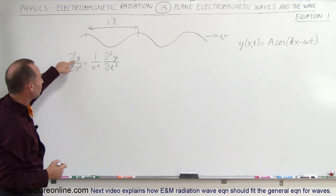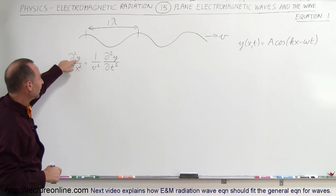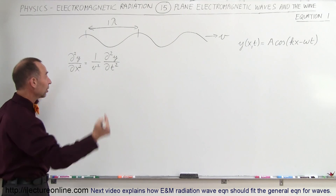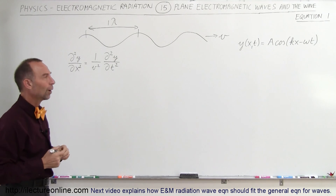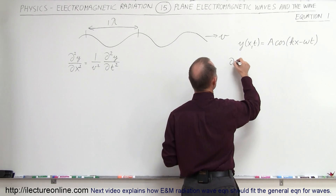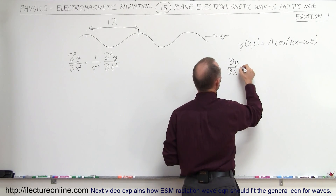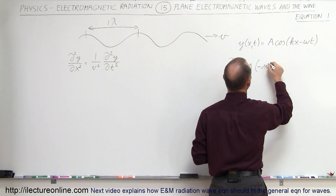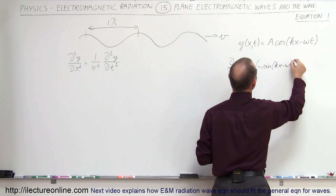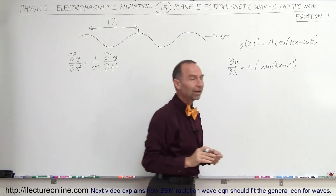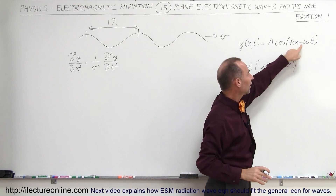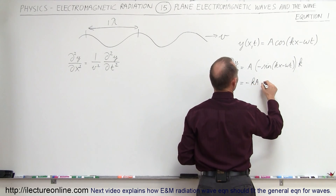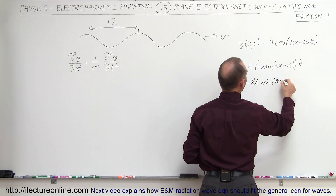We take the function y and find its second derivative with respect to x, then find the second derivative with respect to t, and plug both into the equation to verify the left side equals the right side. First, the derivative of y with respect to x equals A times the negative sine of kx minus omega t, times the derivative of the angle with respect to x, which is the constant k. So the first derivative equals minus kA times the sine of kx minus omega t.